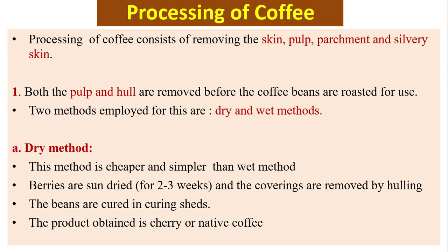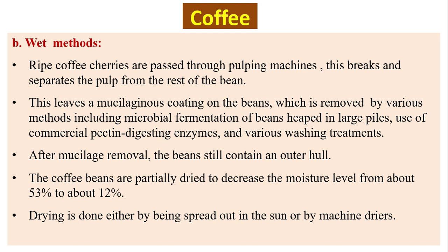Processing of coffee consists of removing the skin, pulp, parchment, and silvery skin. The pulp and hull are removed before the coffee beans are roasted. Two methods are employed: the dry method and the wet method. The dry method is cheaper and simpler. Berries are sun-dried for two to three weeks and the coverings are removed by hulling. The beans are cured in curing sheds, and the product obtained is called cherry or native coffee.